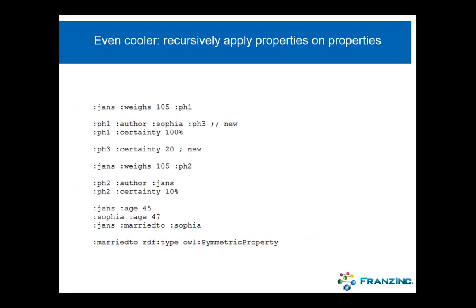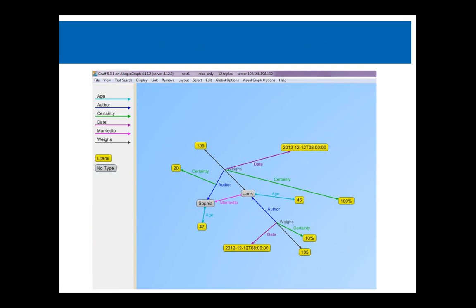Even cooler is that, unlike in regular property graph databases, we can recursively apply properties on properties. This is again the same statement, but notice that property handle has an author, Sophia, but it has its own property handle. Then we say the certainty that Sophia made the statement is only 20%. If I show this in Gruff, our visualization tool, we see roughly the same picture, but now Jans weighs 105 kilos, the author of that statement was Sophia, but I'm not entirely certain that she made that statement because the certainty is only 20%. Statements about statements can have statements themselves.